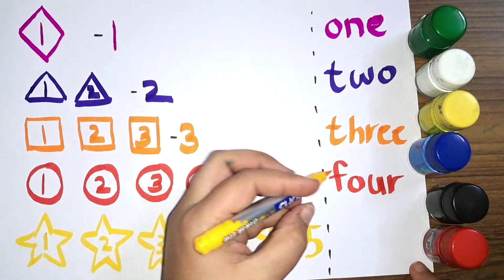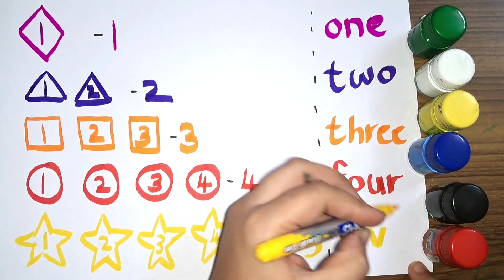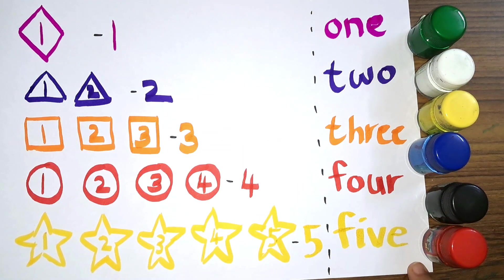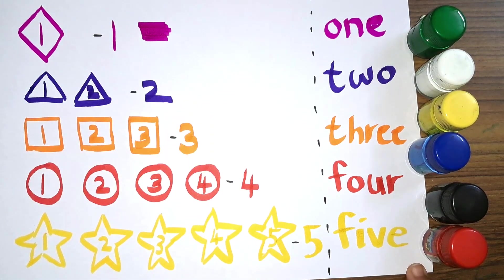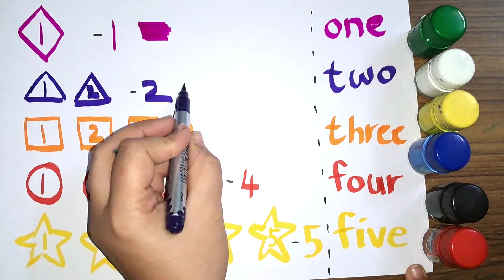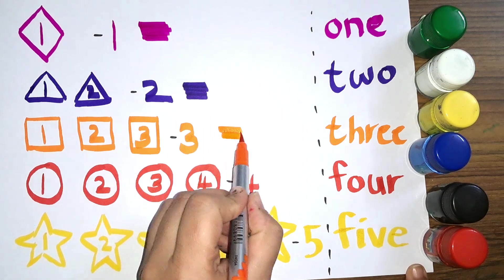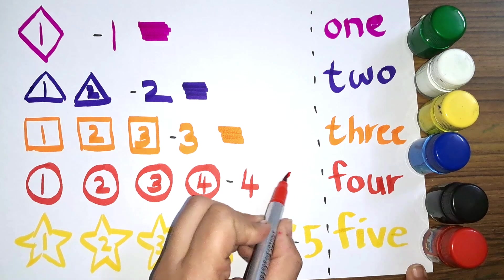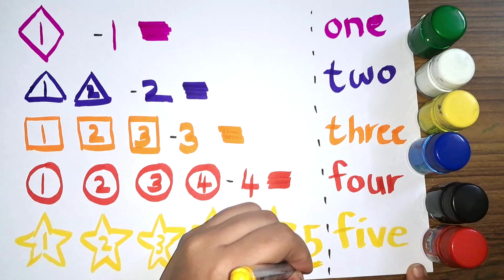And the spelling of five is F-I-V-E, five. Let's see the colors. This is pink color. Next we have purple color. Next we have orange color. Then there is red color. Then the last one is yellow color.